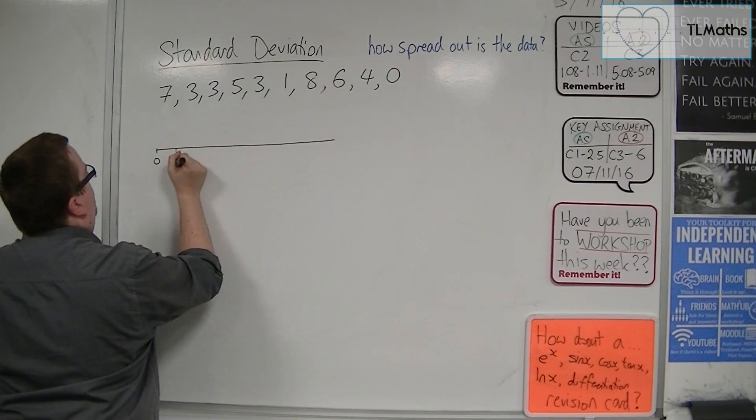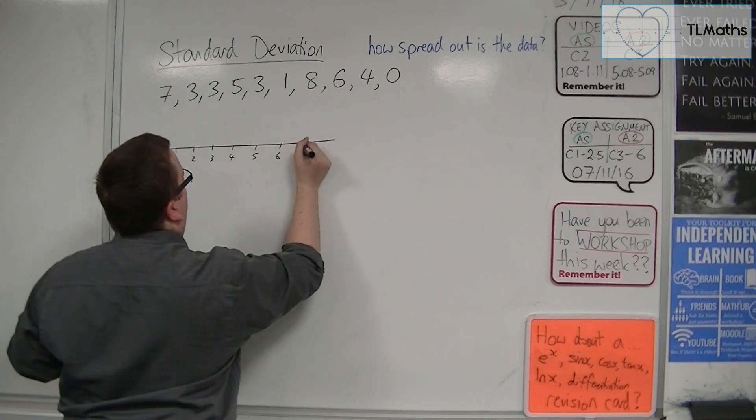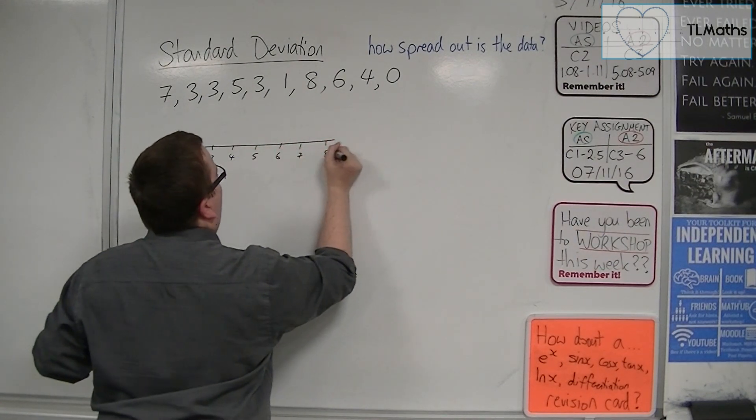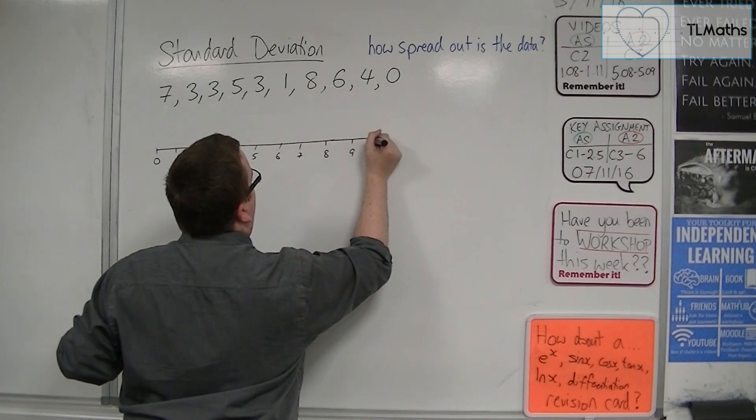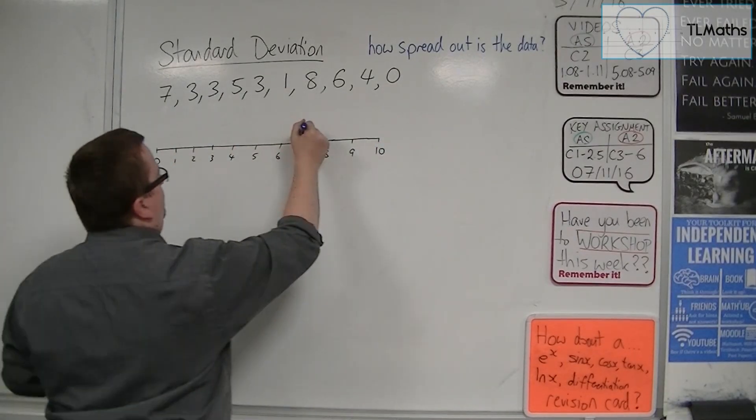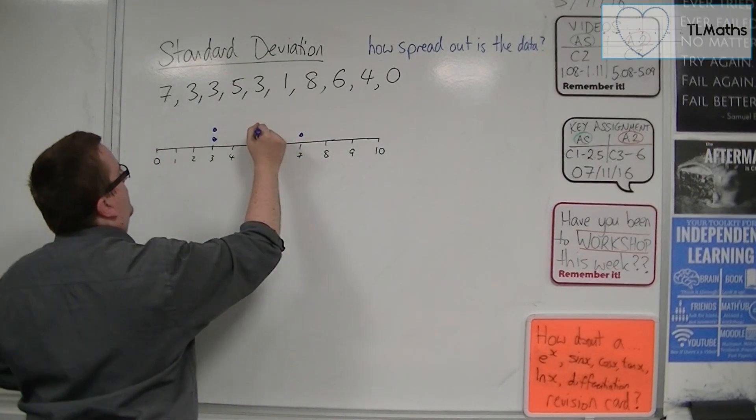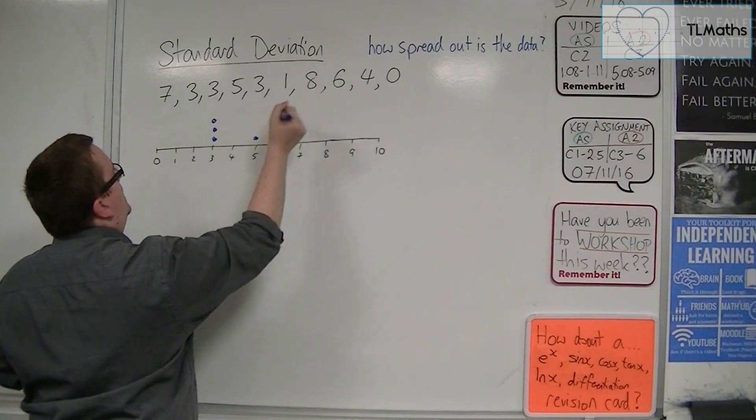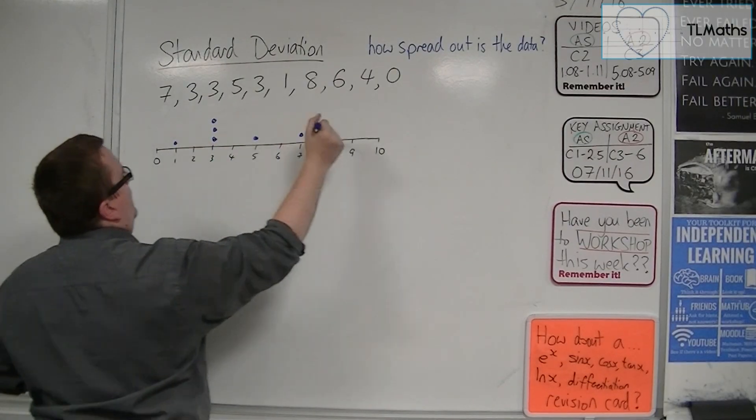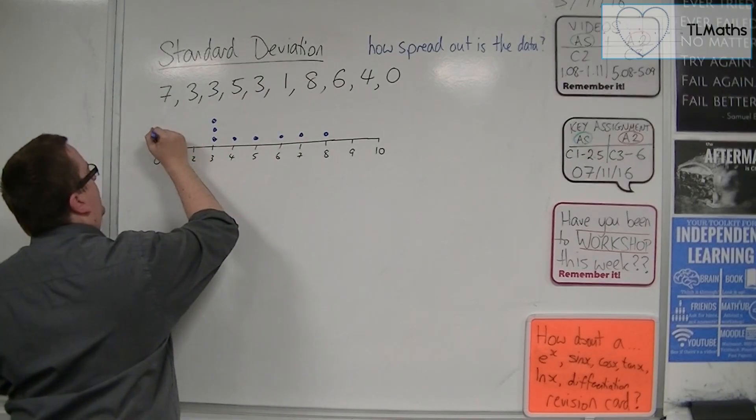So 0, 1, 2, 3, 4, 5, 6, 7, 8, 9, and let's go up to 10. So we've got a 7, we've got a 3, and another 3, and a 5, and another 3, and a 1, and an 8, and a 6, and a 4, and a 0.